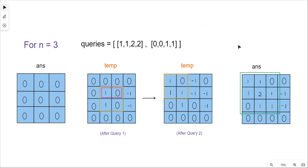We calculate the answer matrix from the temp matrix using the concept of prefix sum. The first cell of the answer matrix is the same as the temp matrix. The second cell equals the value of the previous cell in the answer matrix plus the current value in the temp matrix — so 0 plus 1 equals 1. The third cell equals 1 plus minus 1 which results in 0. We calculate this for every cell in the answer matrix row by row, and then return the final answer matrix.